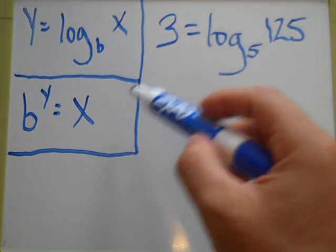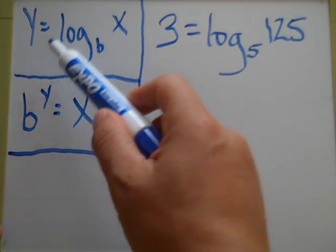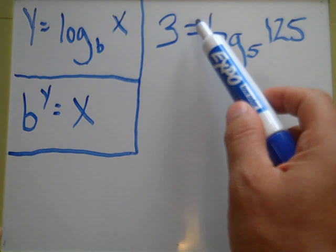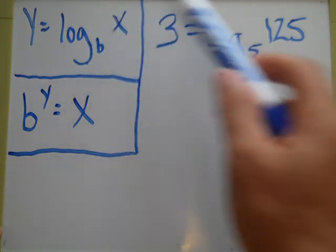And the way that you do that is pretty simple. You just match everything up. You see how this and this are very similar. You've got y equals, 3 equals, log base, log 5, or x, and then 125.